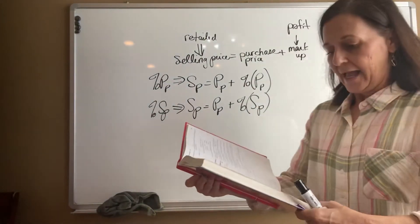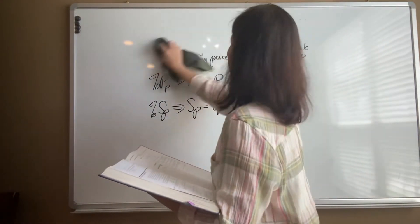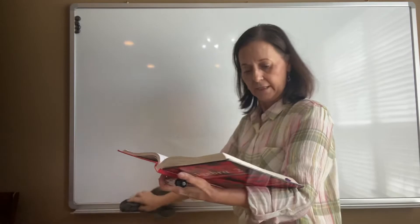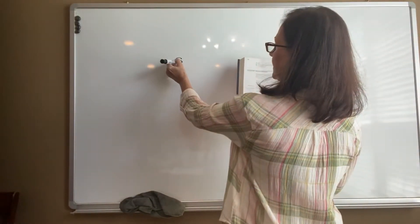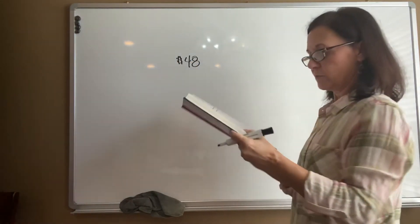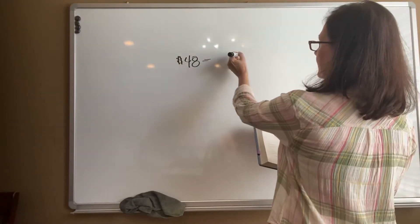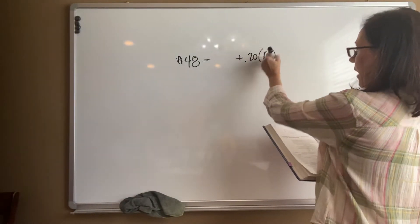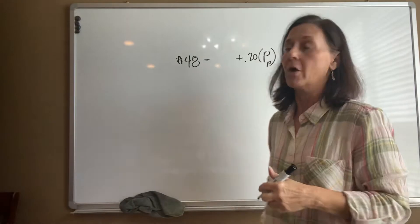Let's look at example one on page 420. It reads the selling price was $48. So that's my selling price, the price we sold it for. If the markup was 20% of the purchase price, then what was the purchase price and what was the markup?